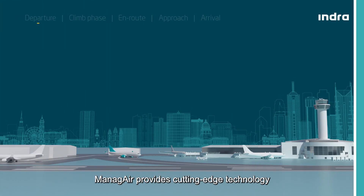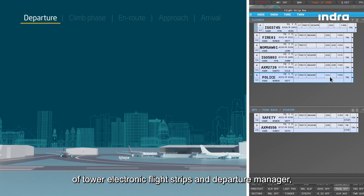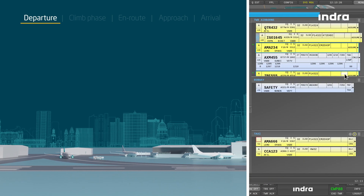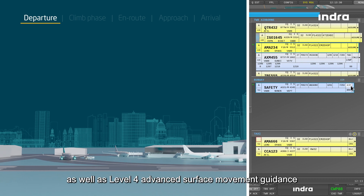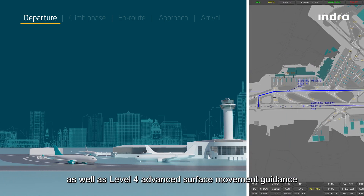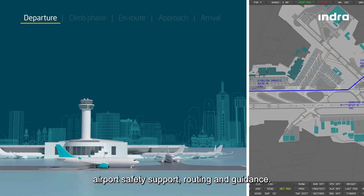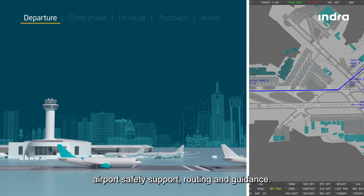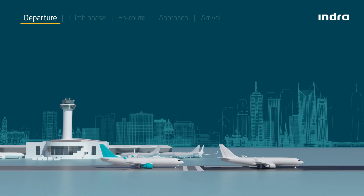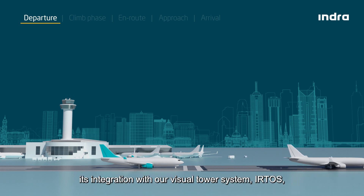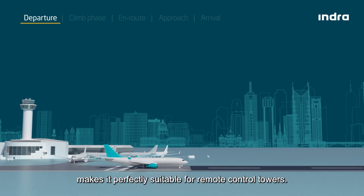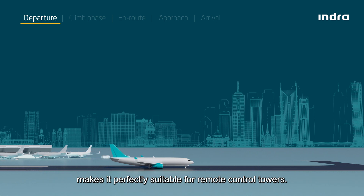ManageAir provides cutting-edge technology including tower electronic flight strips and departure manager, as well as Level 4 advanced surface movement guidance and control system for surveillance, airport safety support, routing and guidance. Moreover, its integration with our visual tower system, IRTOS, makes it perfectly suitable for remote control towers.